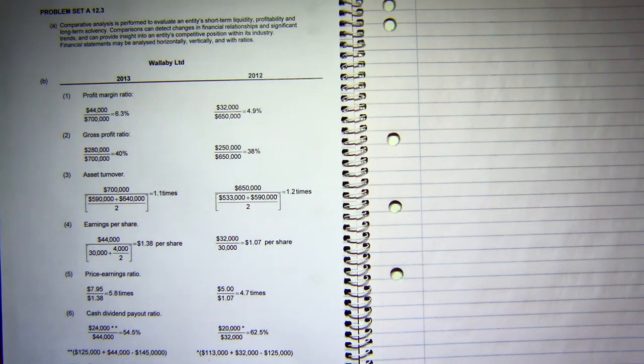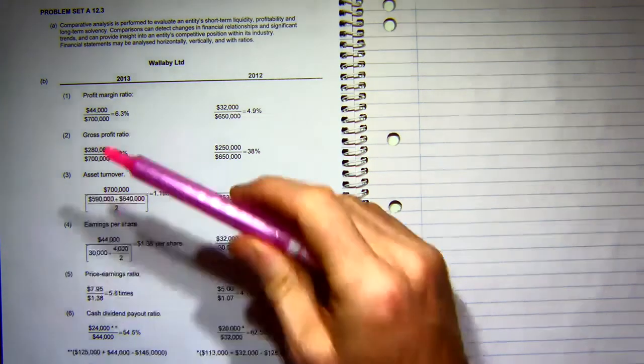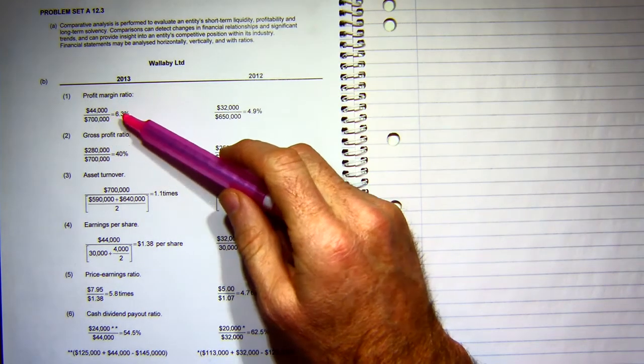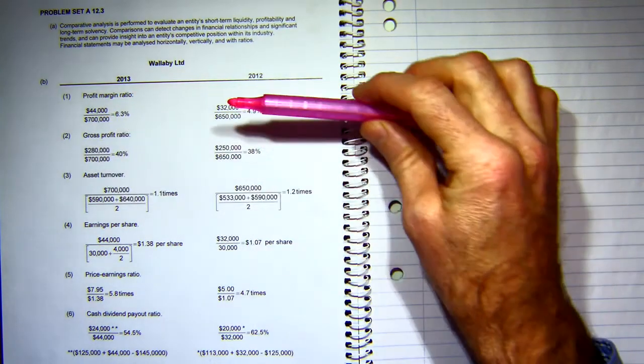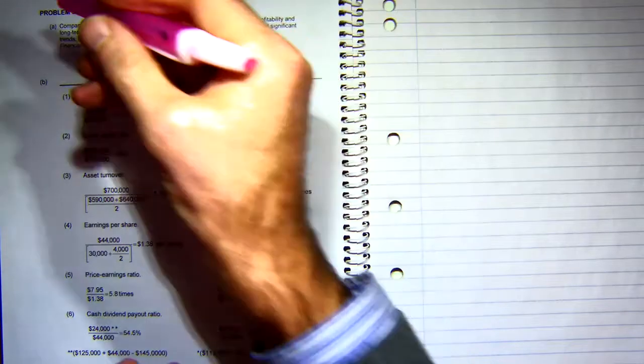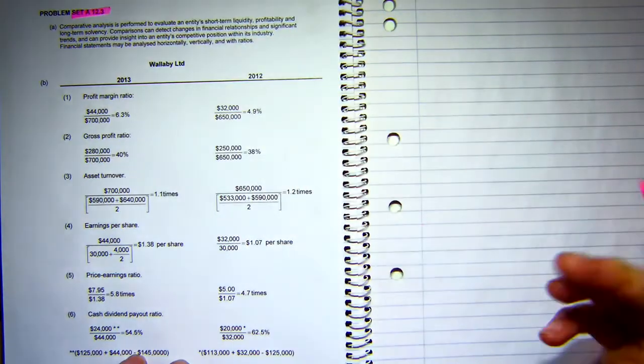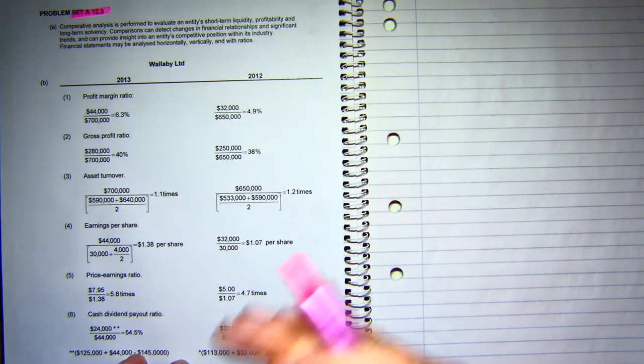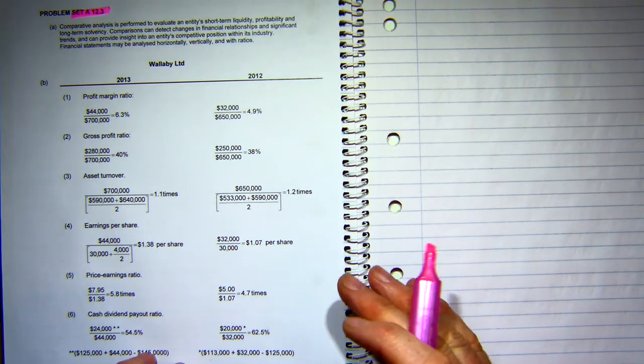What we've got here is an example of an exam type question. In the exam we won't get you to calculate ratios, we'll just get you to interpret them. This is from problem set 12.3a which is in your textbook, and what we need to do is some analysis.